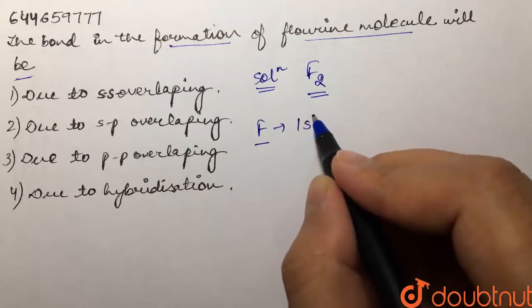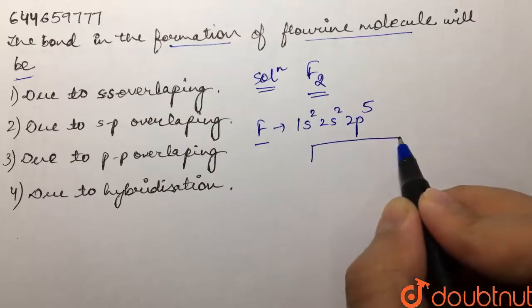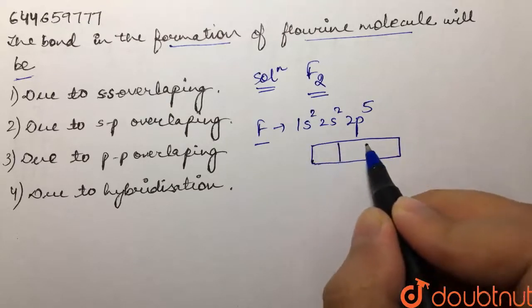It has a configuration of 1s2, 2s2, and 2p5. So if we look at the p orbitals, we have 5 electrons in here.